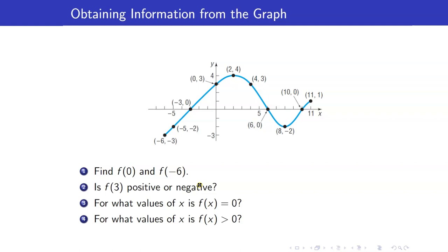In the previous example, we were given the equation of the function and obtained information about the graph. This time, we have the opposite: we are given the graph of a function and want to determine information about the function based on its graph. Let's start with finding f(0). This is the y-coordinate when x equals 0. On our graph, when x equals 0, the corresponding point is (0, 3), so f(0) equals 3.